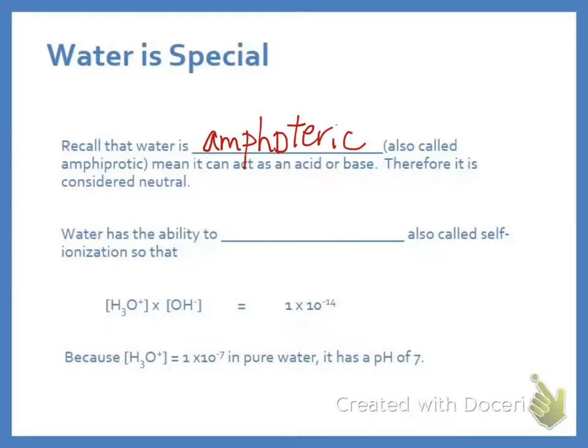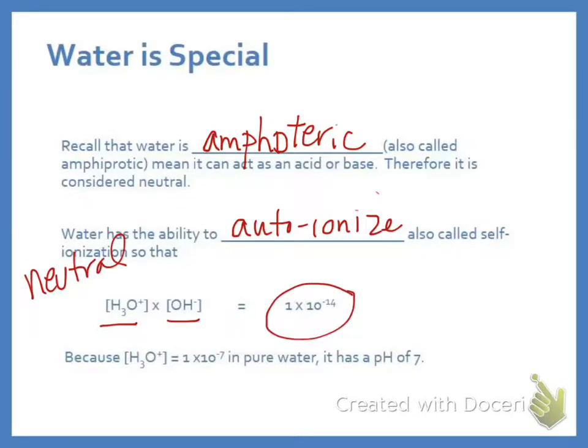Water also has the ability to do something called autoionize. When you have water, what you actually have is H3O+ and hydroxide. In neutral water, remember water is neutral when it's pure. Those values are equal to 1 times 10 to the negative 14. If you took the negative log of that, you would get 14. And that is where we get that pH plus pOH equals 14.